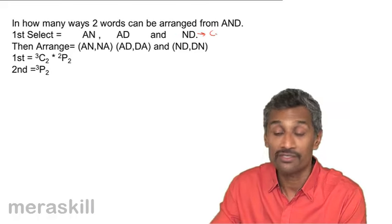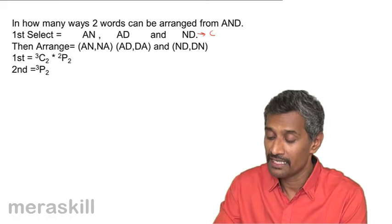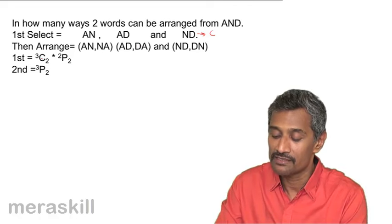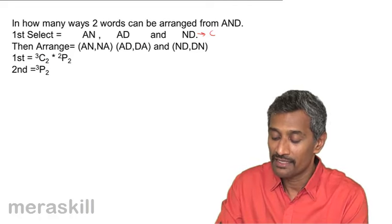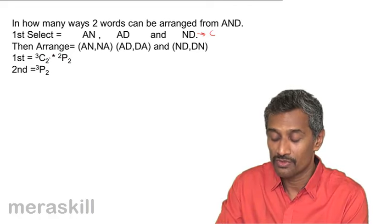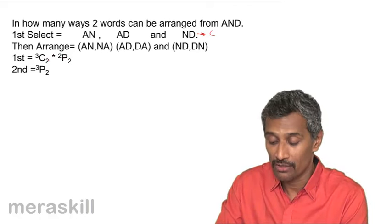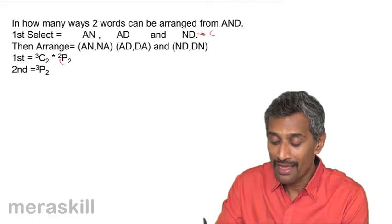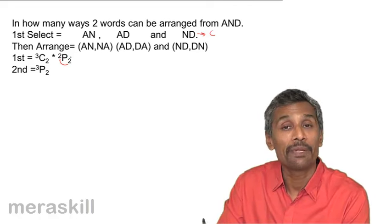So this is the combination part of it. Then arrange AN, NA, AD and DA. So you say first it is 3C2 and then 2P2. That means you're selecting 3 out of 2 and then arranging each of these 2 into 2P2 ways.